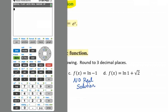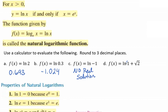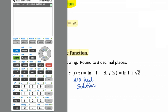For the last one, we have the natural log of 1 plus the square root of 2. Because there are no parentheses around the radical 2 inside the ln, we know that radical 2 is not solely part of the natural log argument — it's the natural log of 1, plus the square root of 2. Putting that into the calculator gives us 1.414.